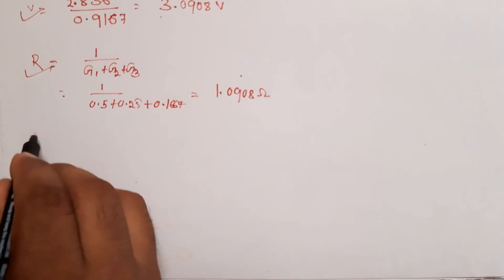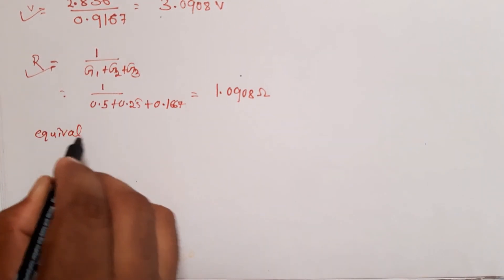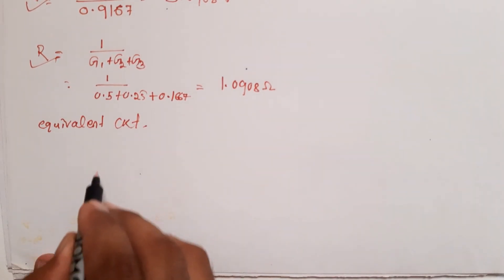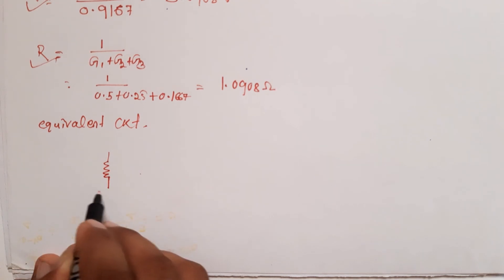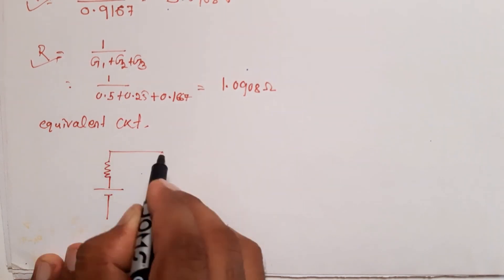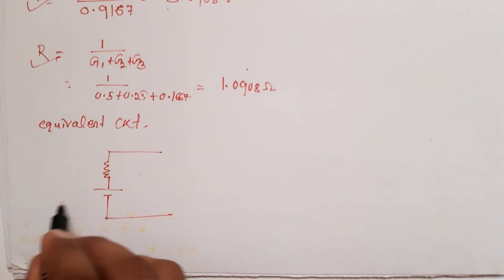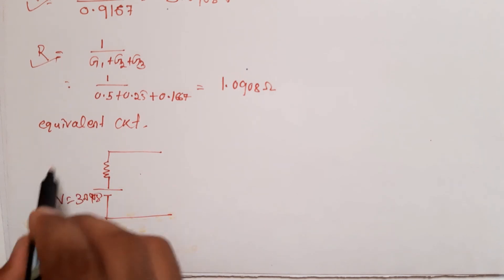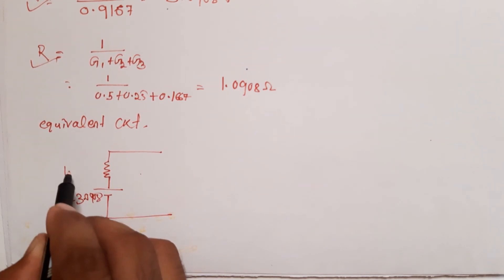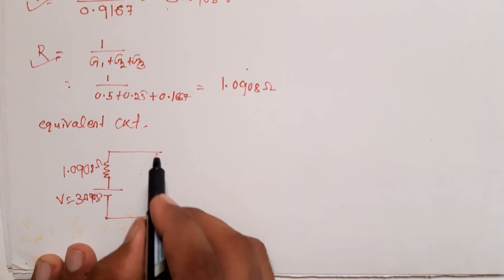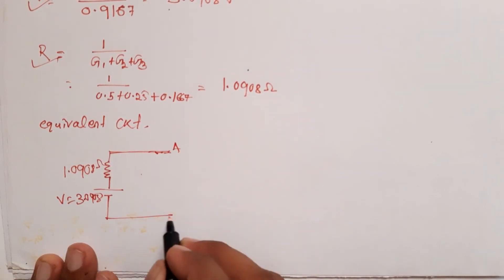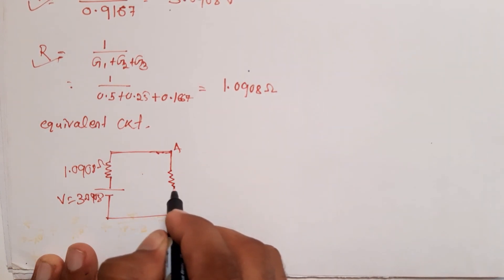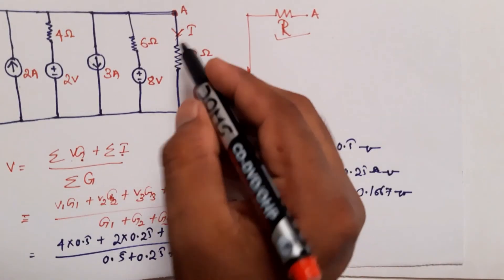Now we draw the equivalent circuit. The equivalent circuit has V equal to 3.0908 volts and R equal to 1.0908 ohms in series. Our objective is to find the current in the AB branch, which is the 8-ohm resistor. We connect this 8-ohm resistor to the equivalent circuit.